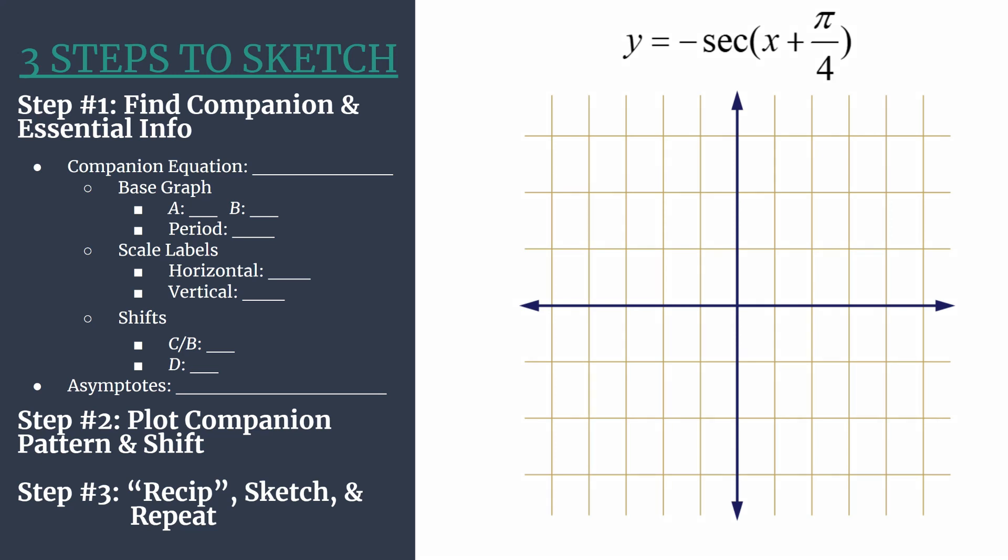I think it's worth noting the general form of a shifted secant equation: y equals a secant of bx minus c plus d. You can see we don't really have that plus d term. We're not going to have a vertical shift here.